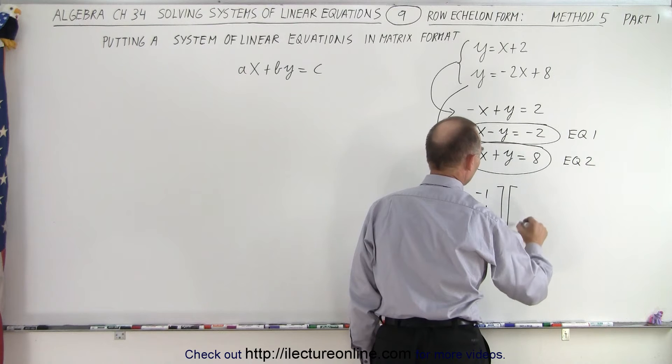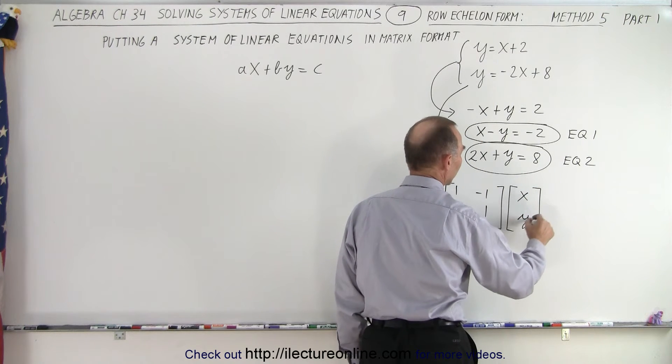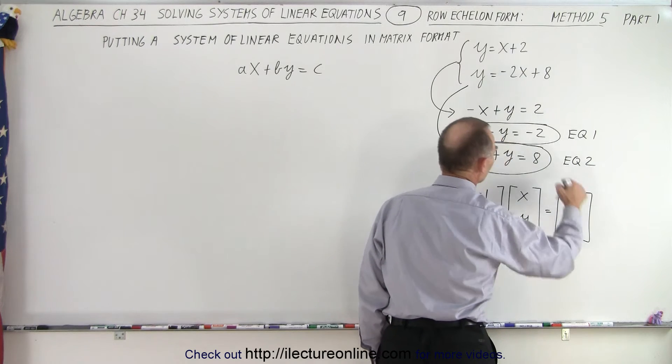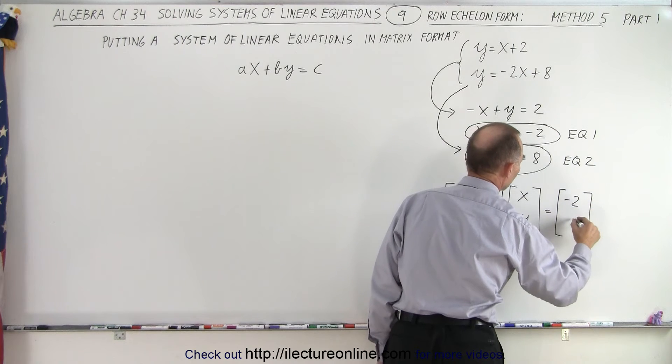Then we have a second matrix with the variables x and y. We're going to set that equal to a third matrix, which has the two constants: -2 and 8.